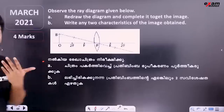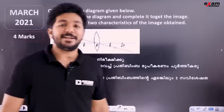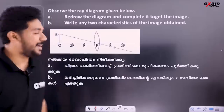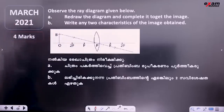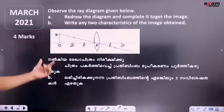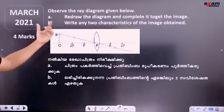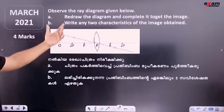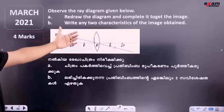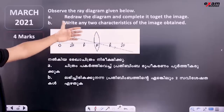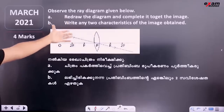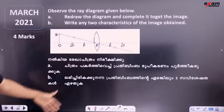We've seen this in the current public exam — it is four marks. Observe the ray diagram given below. Redraw the ray diagram and complete it to get the image. Write any two characteristics of the image.